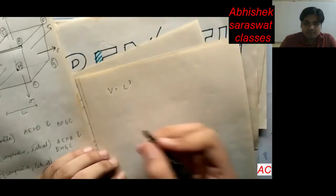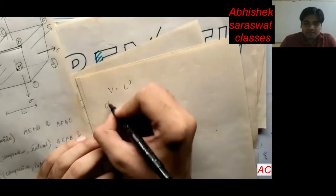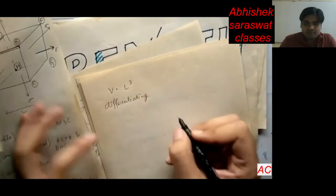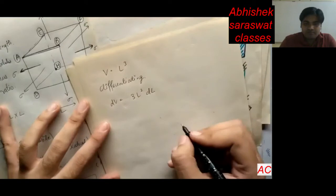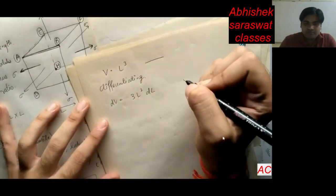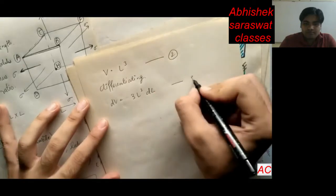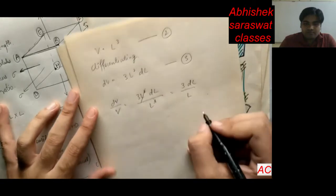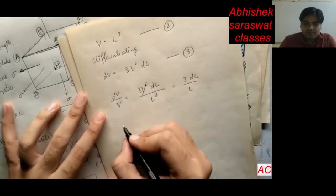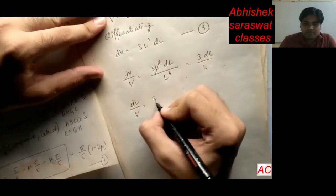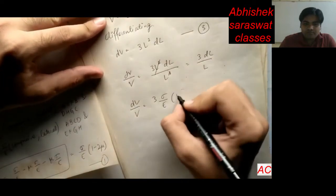The volume of the cube is V equals L cubed. Differentiating with respect to L gives dV equals 3L squared times dL. Dividing both sides by V, we get dV upon V equals 3L squared dL divided by L cubed, which simplifies to 3 dL divided by L. Substituting the expression for dL upon L, we get dV upon V equals 3 sigma upon E into 1 minus 2 nu.